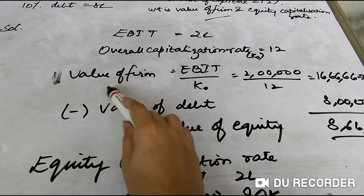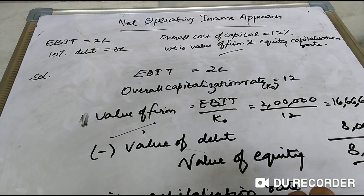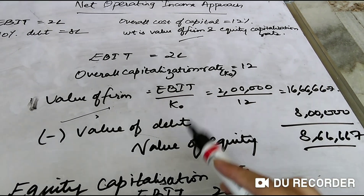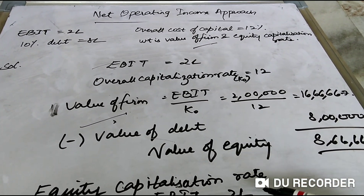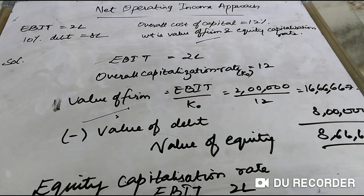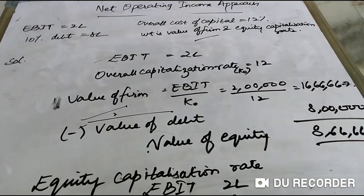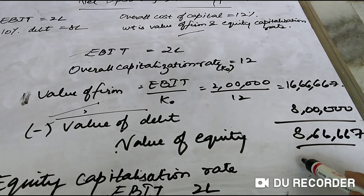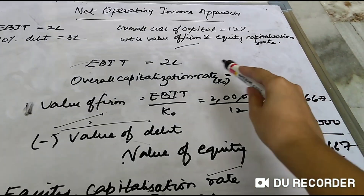There are only two sources of funds: debt and equity. The value of the firm is 16,66,667 rupees. Value of debt is given as 8 lakh rupees. We have to find the value of equity and also the percentage paid to equity holders every year. So: Value of equity = 16,66,667 − 8,00,000 = 8,66,667 rupees.